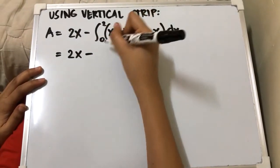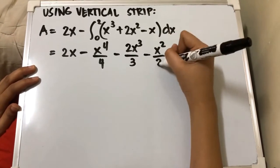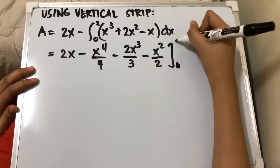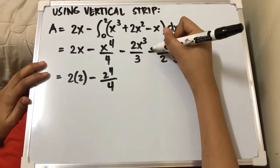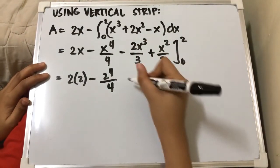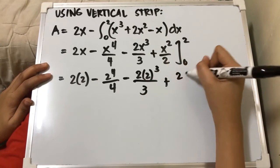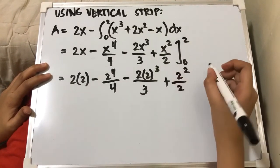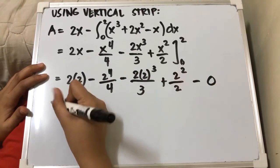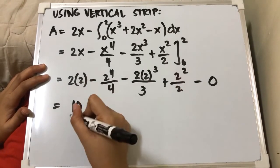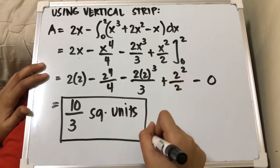The area integral is ∫₀² [2 − (x³−2x²+x)] dx = ∫₀² 2 dx − ∫₀² (x³−2x²+x) dx. Integrating: [2x − x⁴/4 + 2x³/3 − x²/2] from 0 to 2. Substituting x = 2: 4 − 16/4 + 16/3 − 4/2 − 0 = 10/3 square units. Therefore, the area bounded by the curve, the y-axis, and y = 2 is 10/3 square units.